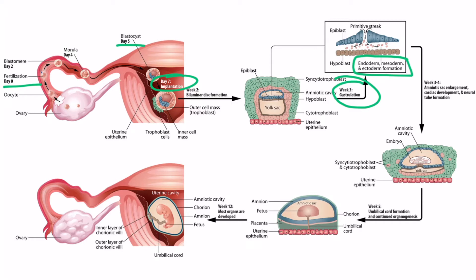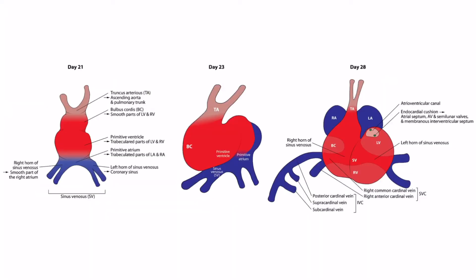With this in mind, let's look at the developing heart. This is an image of the heart from week three to week four of development. Initially, the heart is a very simple tube. Blood flows into the sinus venosus and travels out of the truncus arteriosus. The central part of the tube is broken down into several structures. Many of these adult structures are known as smooth or trabeculated parts of the heart.